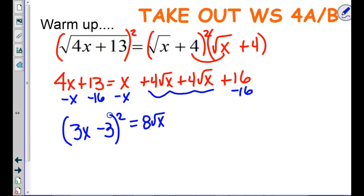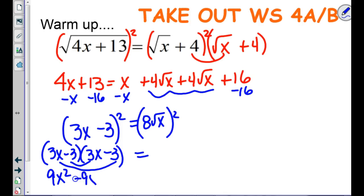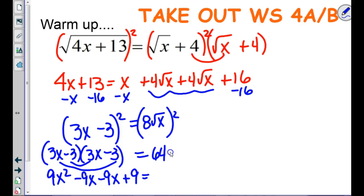We've got to square both sides again. So 3x minus 3 times 3x minus 3 gives 9x squared minus 9x minus another 9x plus 9. On the right side, when I square this it'll be 64, and square root of x squared is just x.